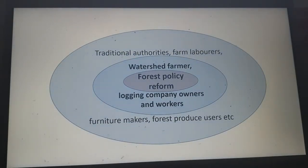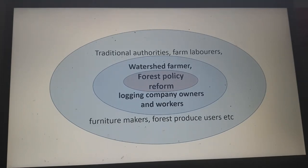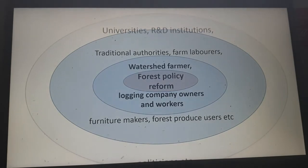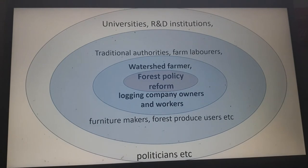The secondary stakeholders in forest policy reform would be traditional authorities, farm laborers, furniture makers, and forest produce users. The tertiary stakeholders would include universities, because they do research around these issues, and politicians. So you can see these are layers of stakeholders related to one single policy.